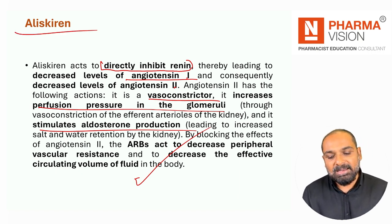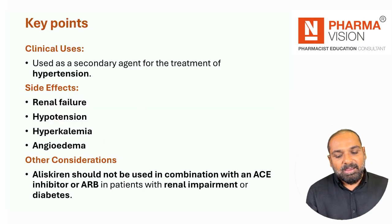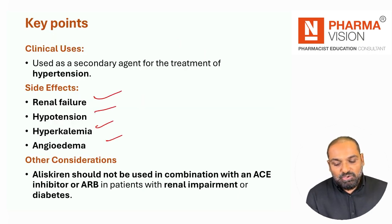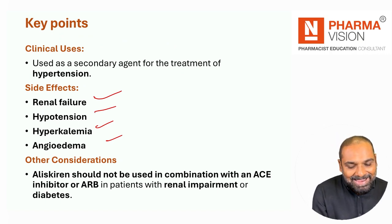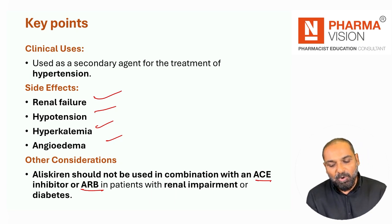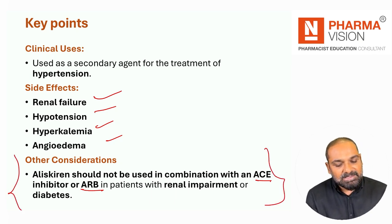To Aliskirin ke baare mein aapko yeh point yaad rakhna hai - inhibit the renin release. Angioedema bhi ho sakti hai. Aliskirin should not be used in combination with ACE inhibitors and ARBs - yeh point key hai, this is the key point you must have to remember.